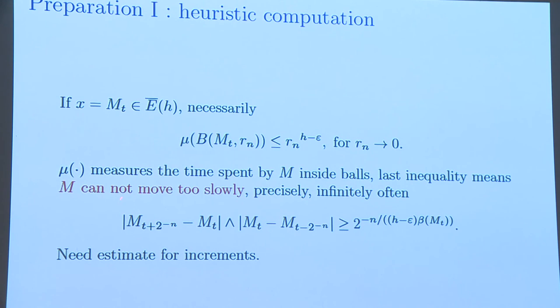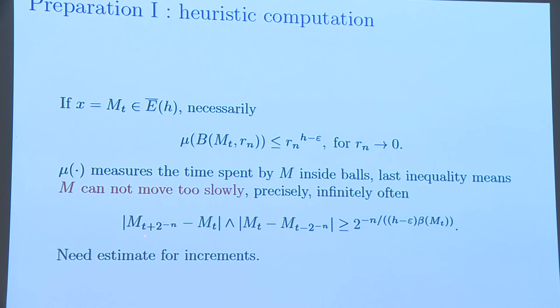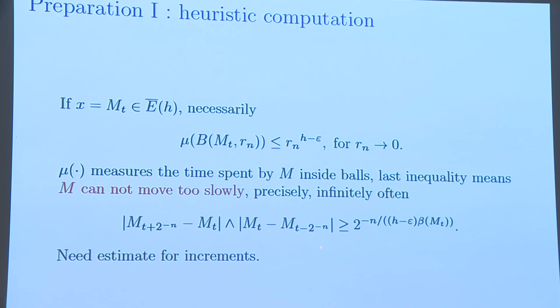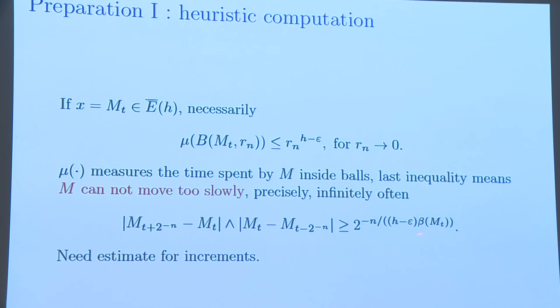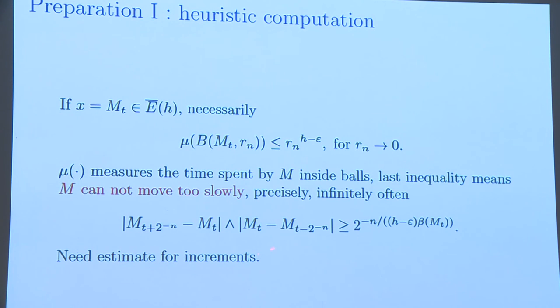It is upper-bounded by something like this. It means that the process cannot be too slow. If we translate it to the increment of the process, it means that the two-sided increment of the process is larger than the increment power 2, so 1 over H essentially multiplied by beta. We need some increment estimates to do some further computations.